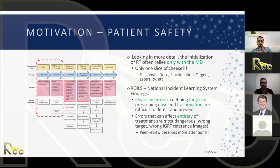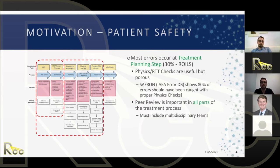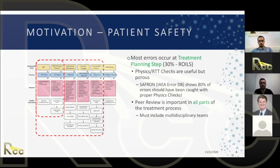Peer review is an extra slice of cheese added to the front to double-check the initial physician decisions. From the same database, about 30 percent of all errors end up at the treatment planning step. From SAFRON, an international database, 80 percent of errors that go all the way through to treatment should have been caught by a physics check. So peer review shouldn't only check the initial MD slice — it should be an all-encompassing check of the entire plan.